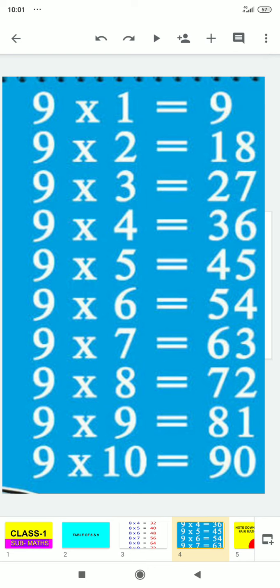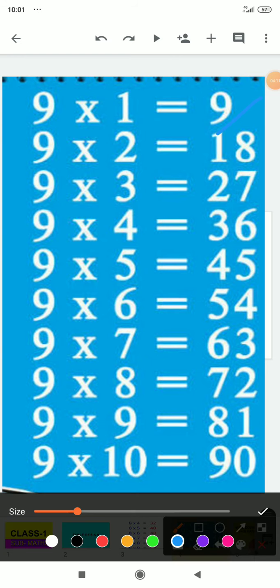9 times 1 is 9, 9 times 2 is 18, 9 times 3 is 27, 9 times 4 is 36, 9 times 5 is 45.